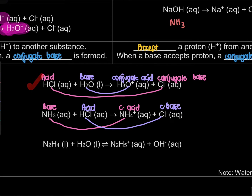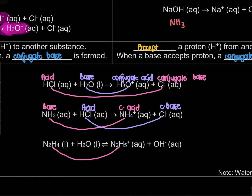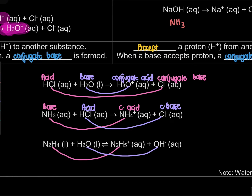For the first two examples it's easy to identify HCl as an acid, but for N₂H₄ and H₂O, it's harder to determine acid and base. That's why it's easier to pair up the species first. Pairing N₂H₄ with N₂H₅⁺ and H₂O with OH⁻: N₂H₄ becomes N₂H₅⁺, hydrogen has increased, so it accepted a proton — N₂H₄ is the base and N₂H₅⁺ is the conjugate acid. H₂O becomes OH⁻, so H₂O is the acid and OH⁻ is the conjugate base.